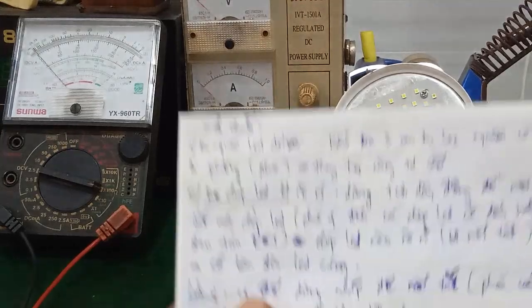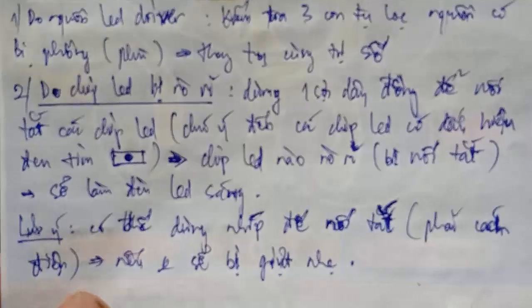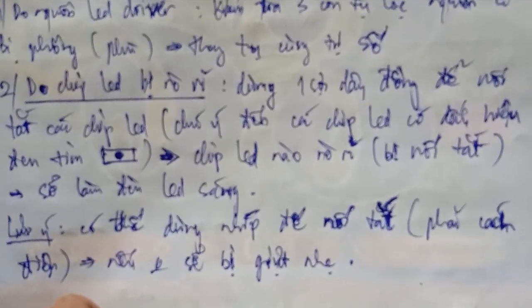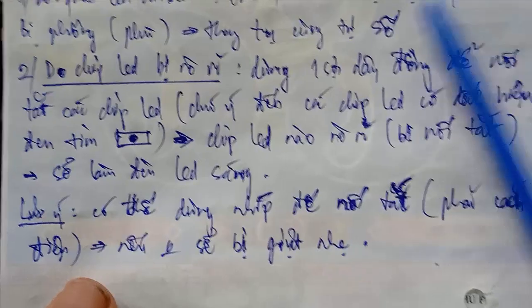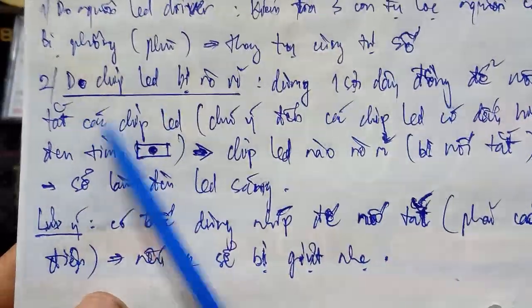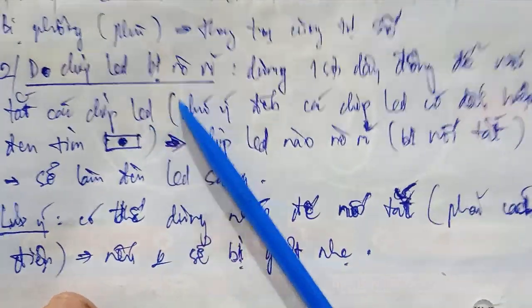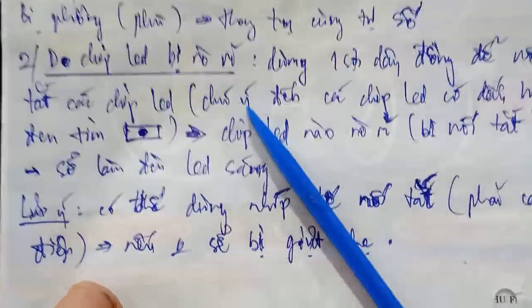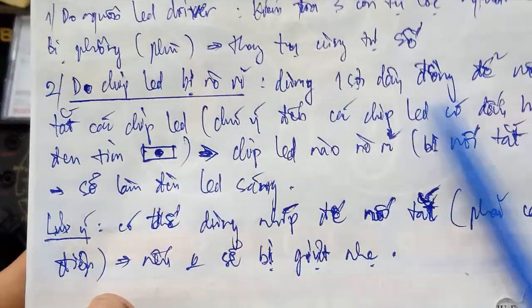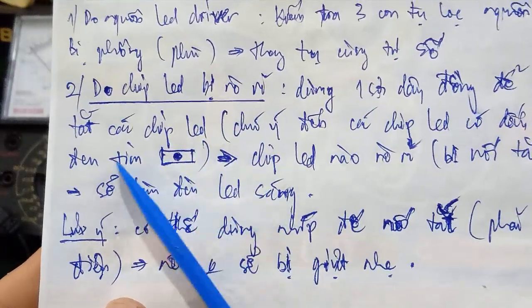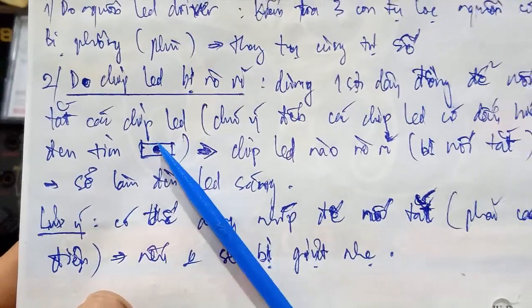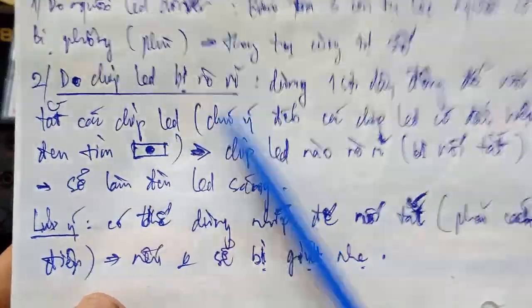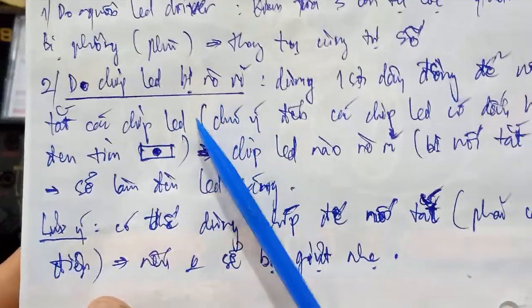Còn đối với những trường hợp chip LED bị rò rỉ, thứ nhất mình dùng một sợi dây đồng để nối tắt chip LED. Mình chú ý đến những chip LED có chấm đen ở tim giữa — ưu tiên câu nối tắt trước. Trường hợp chip LED nào bị rò rỉ mà được nối tắt thì đèn LED sẽ sáng lại.